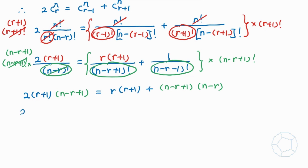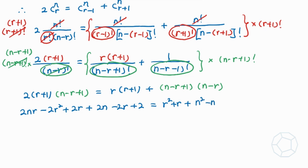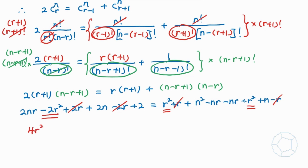Now we expand both sides to simplify. The left-hand side is 2nr minus 2r squared plus 2r plus 2n minus 2r plus 2. The right-hand side is r squared plus r plus n squared plus n minus r terms. After canceling plus r and minus r on the right, and plus 2r and minus 2r on the left, we rewrite it as a quadratic equation in r. On the right we have 2r squared and on the left negative 2r squared, putting these together gives 4r squared.